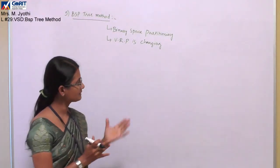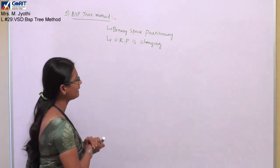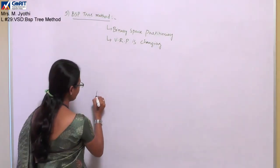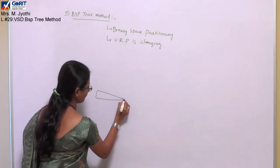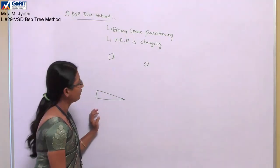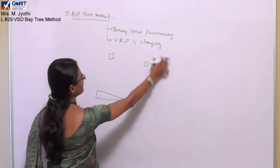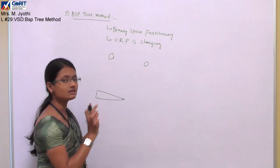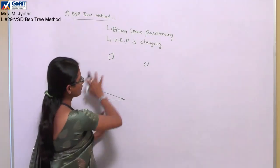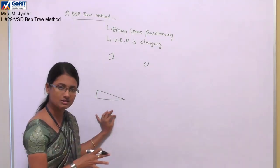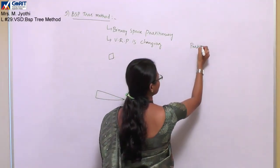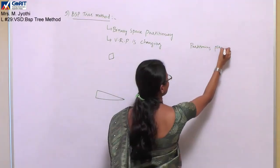Let us understand this with an example. We have three objects in our space. Now, in the binary space partitioning method, we need to partition this space using partitioning planes. Let's consider the first partitioning plane P1, which divides the complete space into two parts.